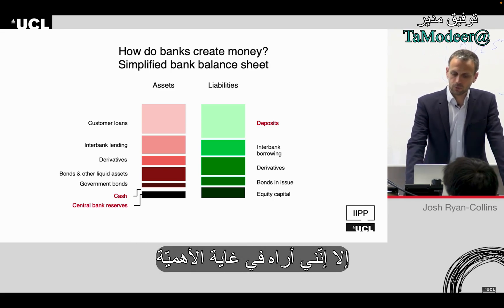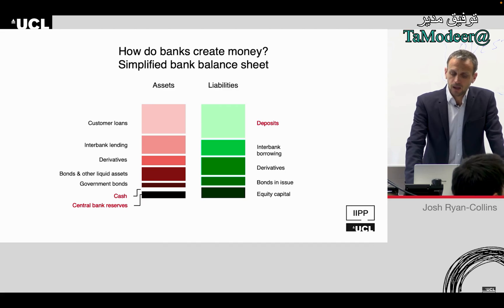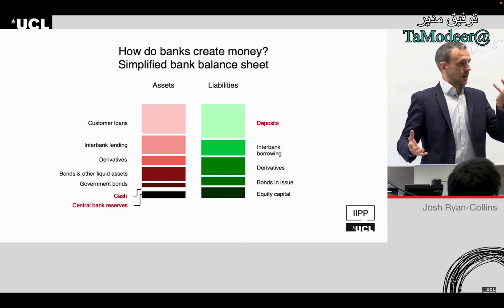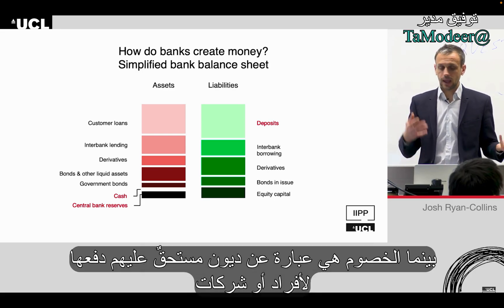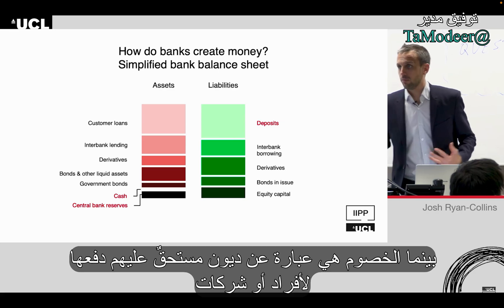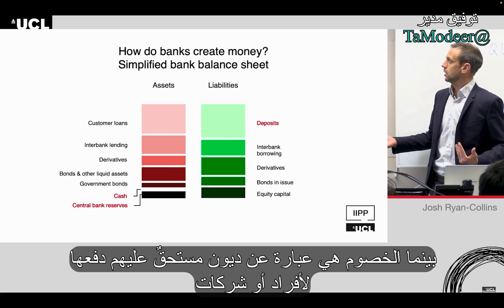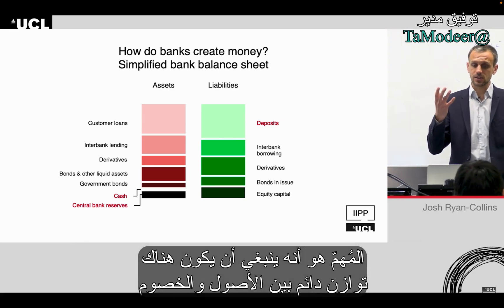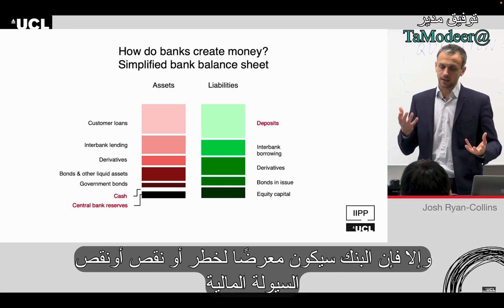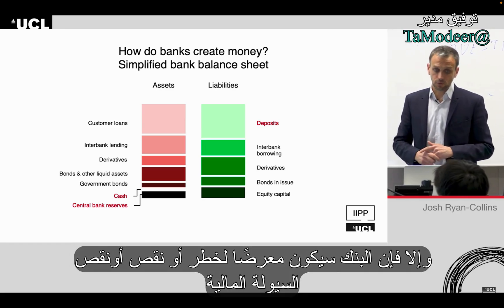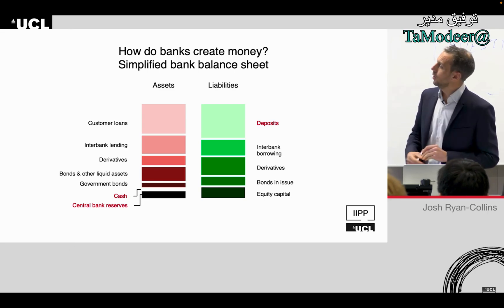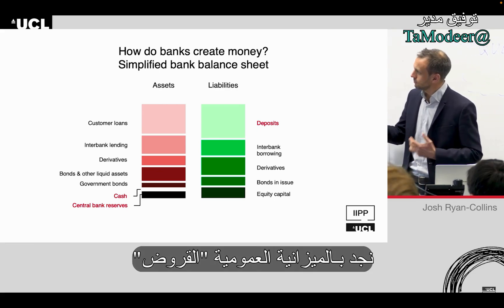This is a simplified bank balance sheet. Banks have, like any firm, assets from which they derive a flow of income, and liabilities — that is, what they owe to other people or organizations. The key thing is that those assets and liabilities must at all times balance, otherwise the bank is in danger of either insolvency or illiquidity.